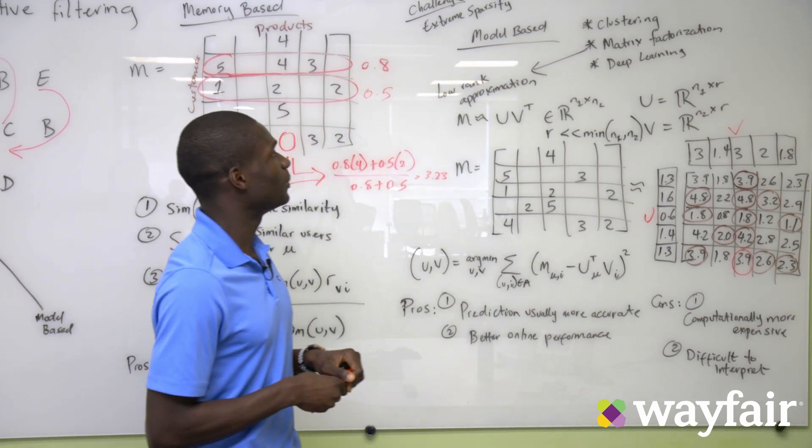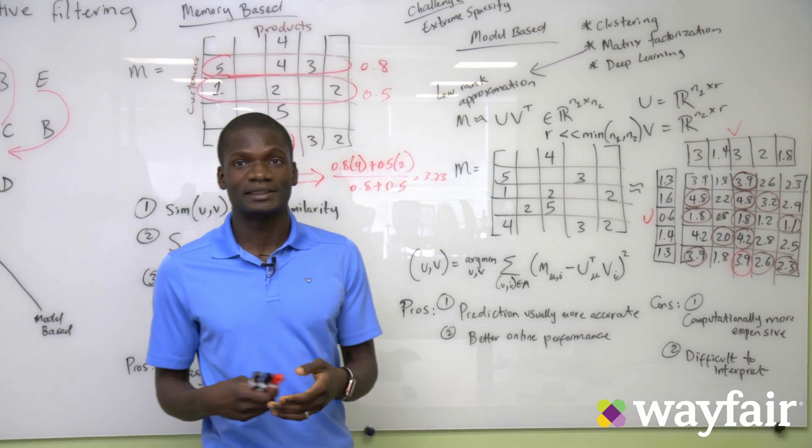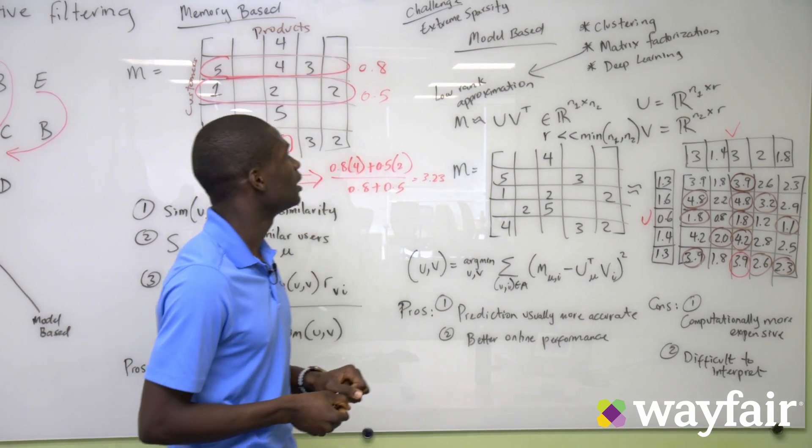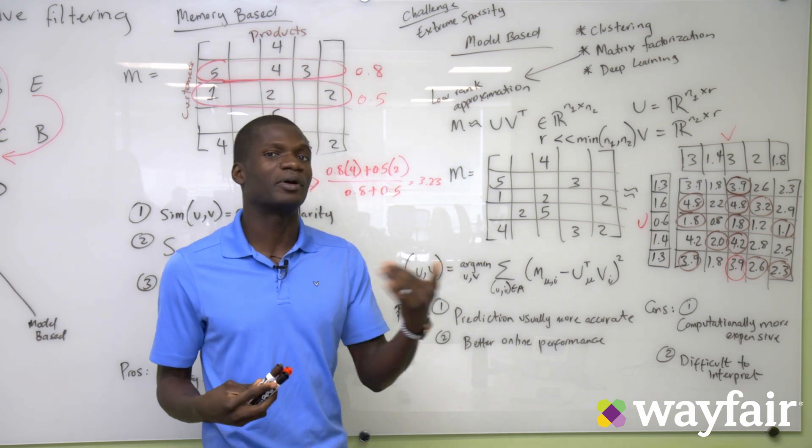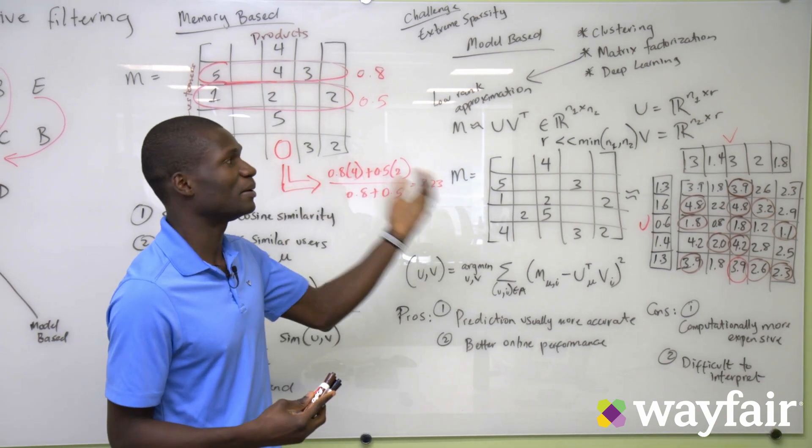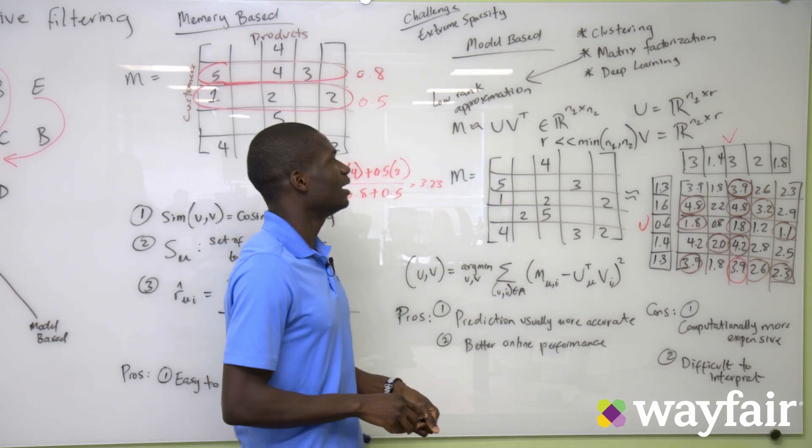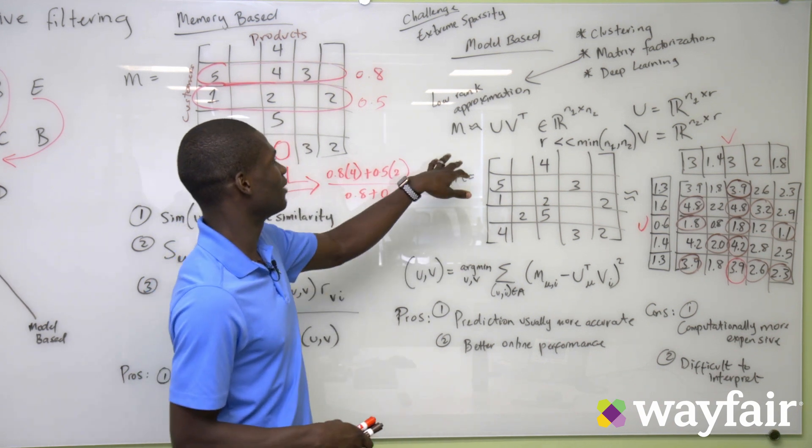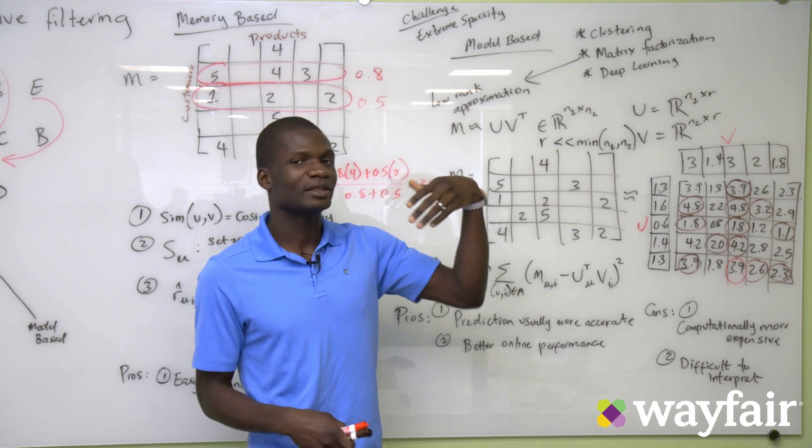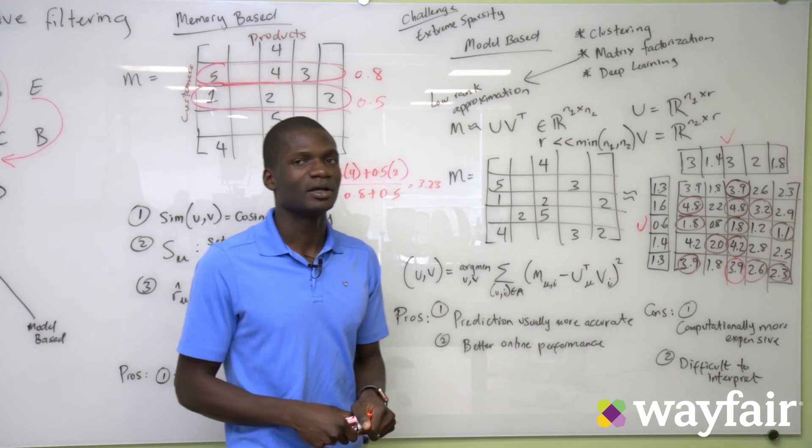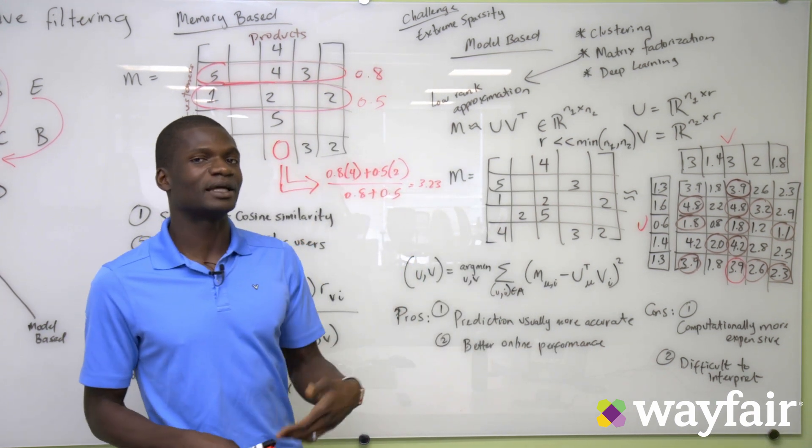Today, I'm just going to mention the matrix factorization example. In matrix factorization, we're effectively trying to find a low-rank approximation of the M matrix that we have. And so you can imagine here, we have our M matrix and we're trying to decompose it into two denser representations with a lower dimension R, where R is much less than the dimensions of the initial M matrix.